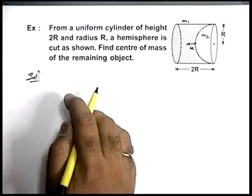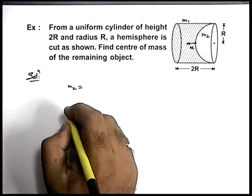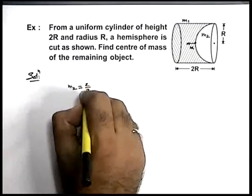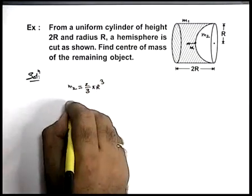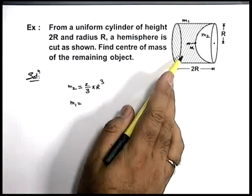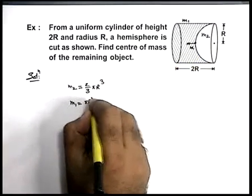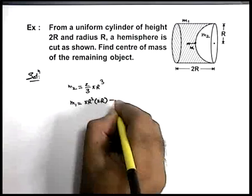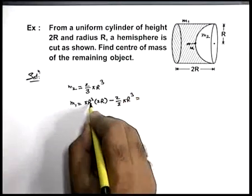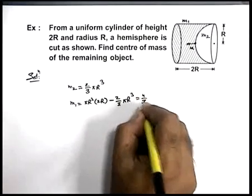So we can state that mass m2 can be written as the total volume of the hemisphere, which is (2/3)πr³. And mass m1 can be written as the volume of the remaining part of the cylinder, that is total volume of cylinder minus hemispherical volume: πr²h minus (2/3)πr³, which equals (4/3)πr³.